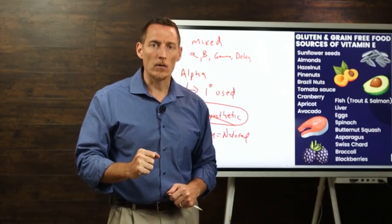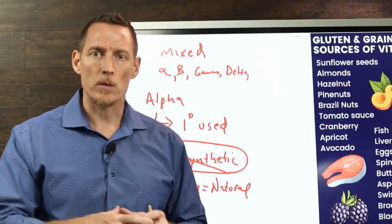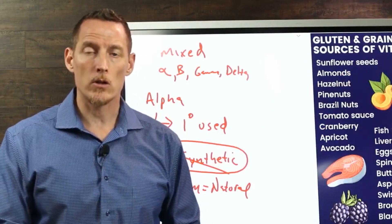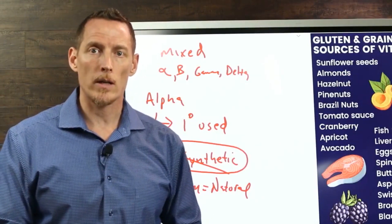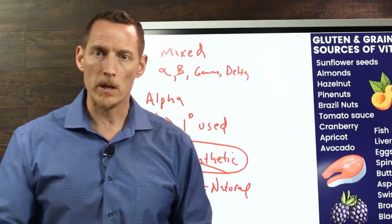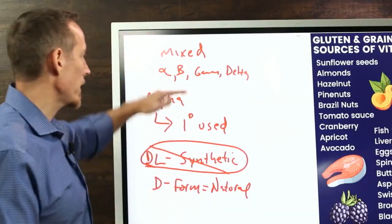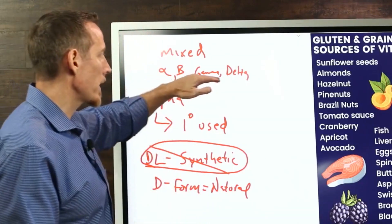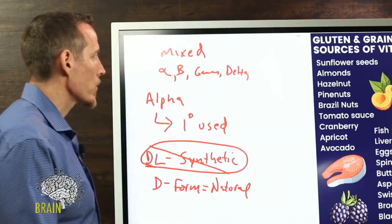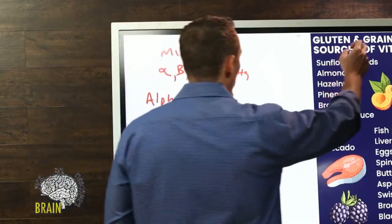Look for something with mixed tocopherols. Generally it will say alpha-tocopherol with mixed tocopherols, indicating that it has alpha, beta, gamma, and delta versions of vitamin E.